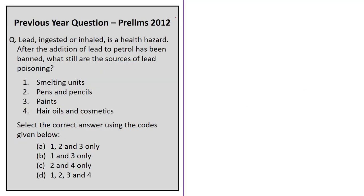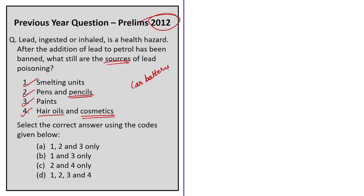The next question is a previous question from 2012. Lead ingested or inhaled is a health hazard after the addition of lead to petrol has been banned. What still are the sources of lead poisoning? Four options are given: smelting units, pen and pencils, paints, and hair oils and cosmetics. Pencils contain lead; lead is also a common impurity in cosmetic products, hair oils, cosmetics, smelting units, and paints. Some other common sources of lead include car batteries, radiators, and some inks. The correct answer is option D — 1, 2, 3, and 4.